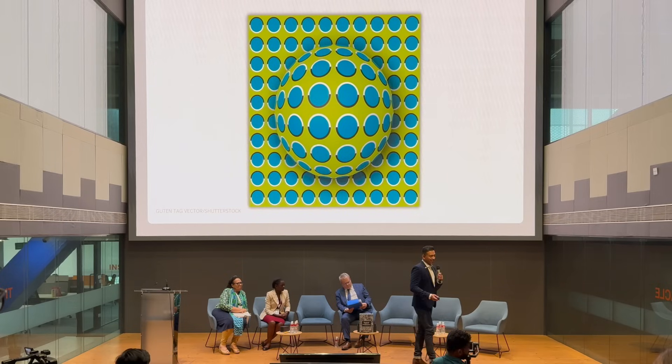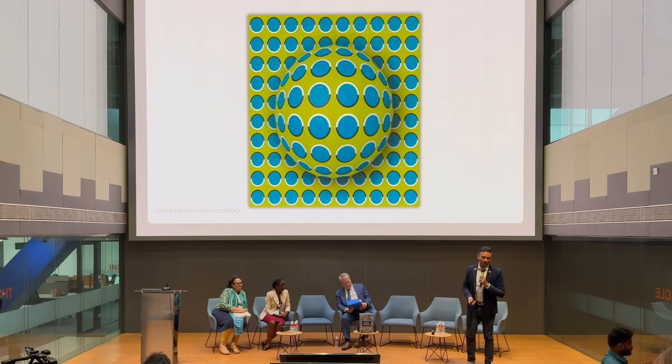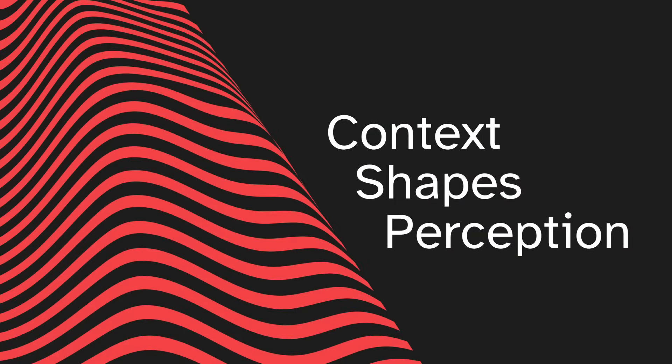This is part of cognitive psychology. It influences our perception, our emotions, and our decisions. In simple terms, context shapes perception. Similar to these optical illusions, how we design our technology influences how we feel, how we behave, and how we act.